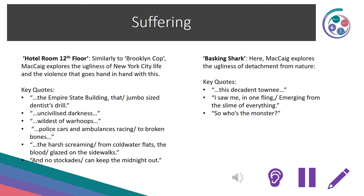In Hotel Room 12th Floor, similarly to Brooklyn Cop, McCaig explores the ugliness of New York City life and the violence that goes hand in hand with this. Key quotes: 'The Empire State Building', 'that jumbo sized dentist drill', 'Uncivilised darkness', 'Wildest of war hoops', 'Police cars and ambulances racing to broken bones', 'Harsh screaming from cold water flats', 'The blood glazed on the sidewalks', and 'no stockades can keep the midnight out.' In Basking Shark, McCaig explores the ugliness of our detachment from nature: 'This decadent townie', 'I saw me in one fling emerging from the slime of everything', and 'So who's the monster?'